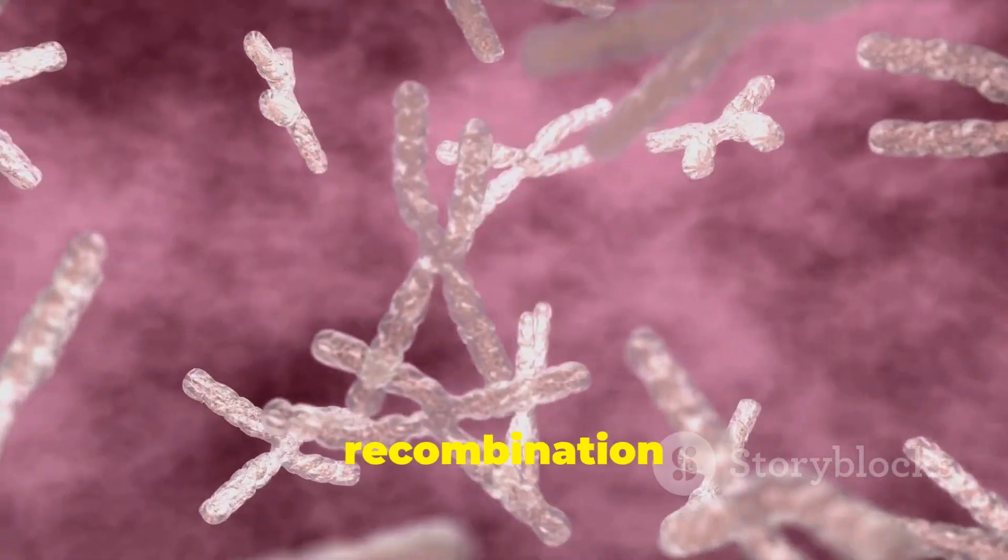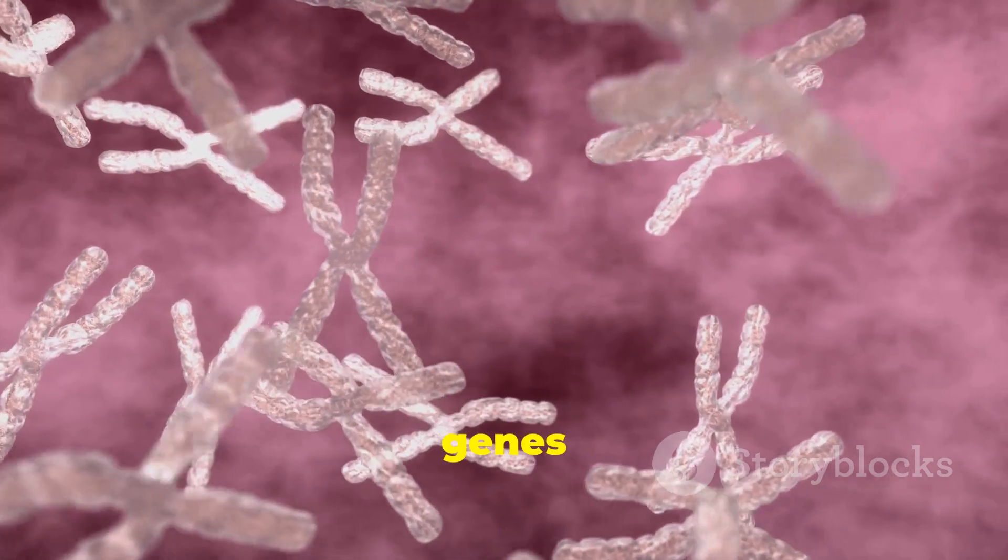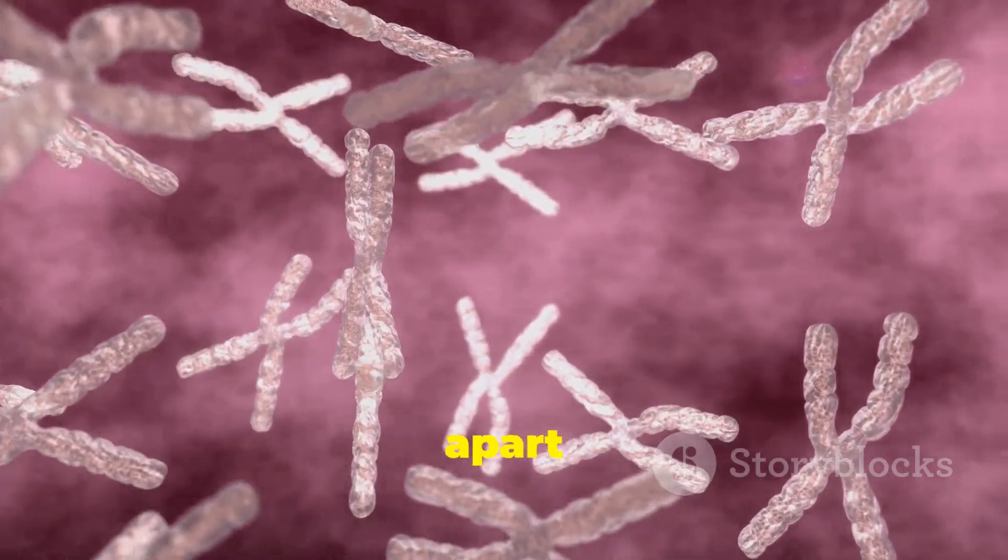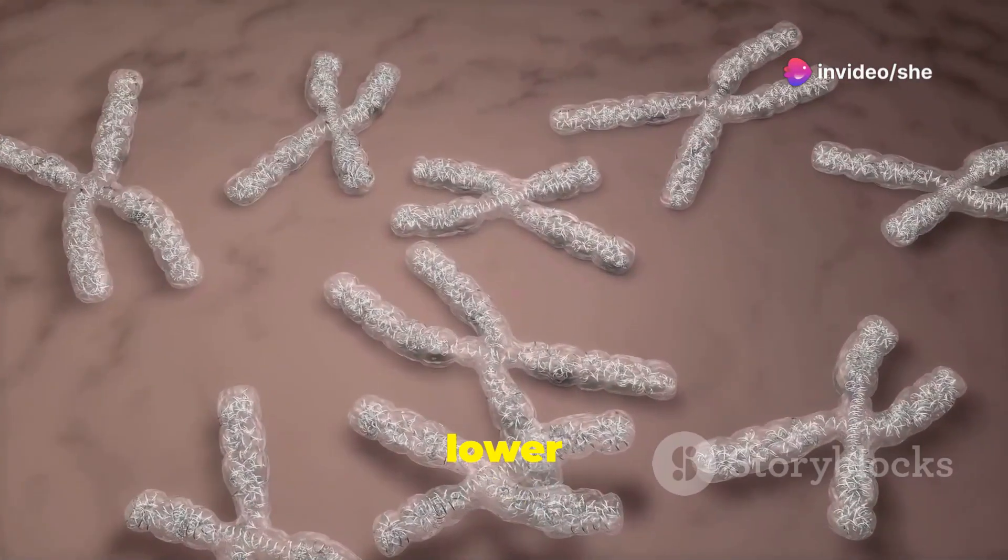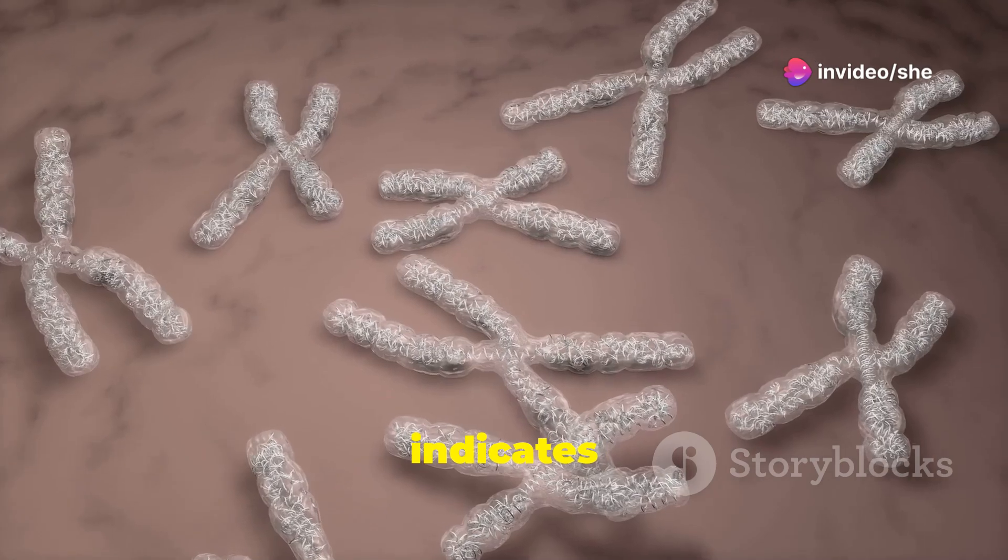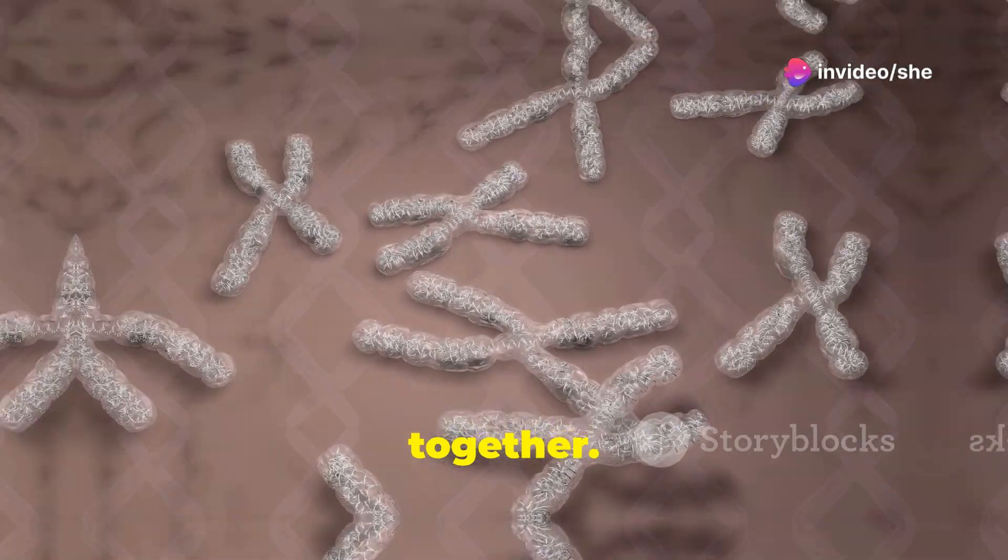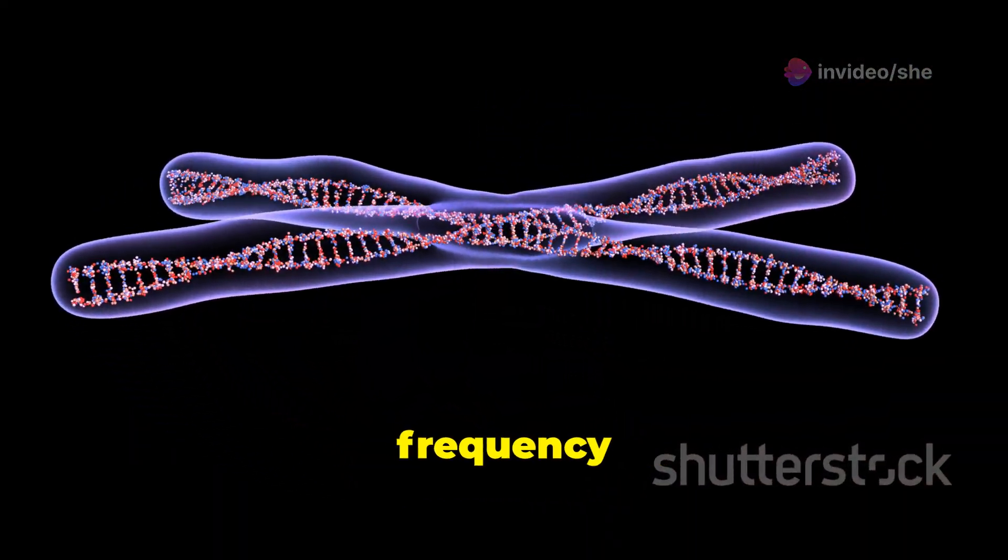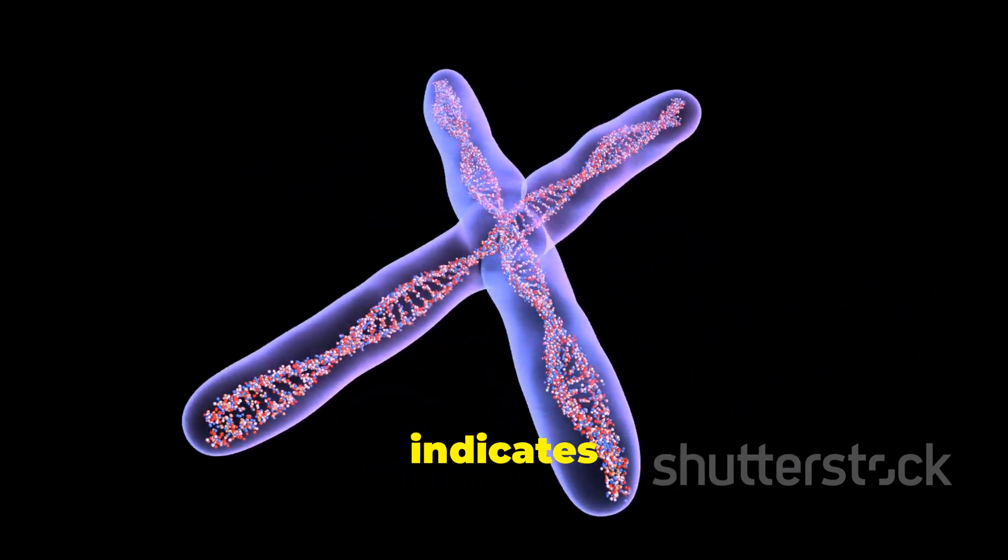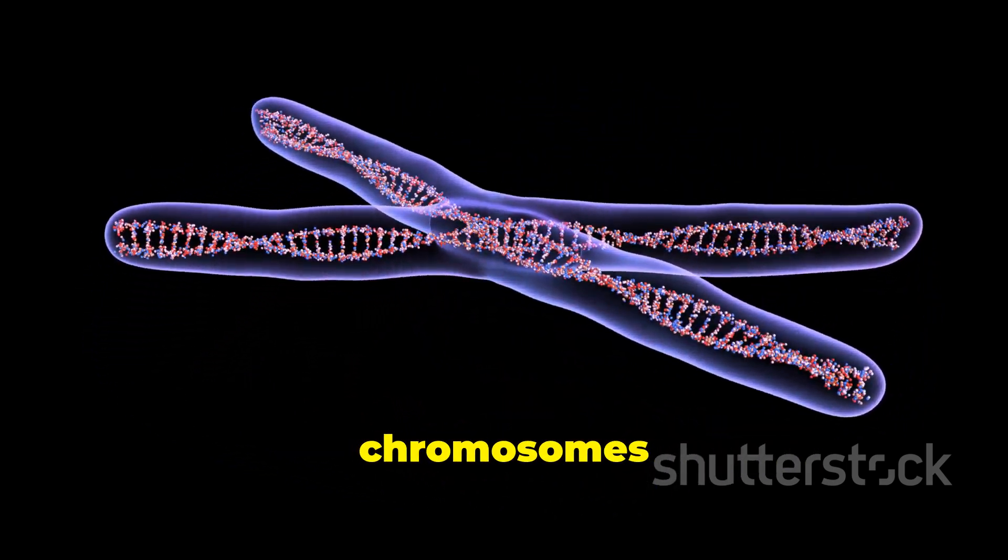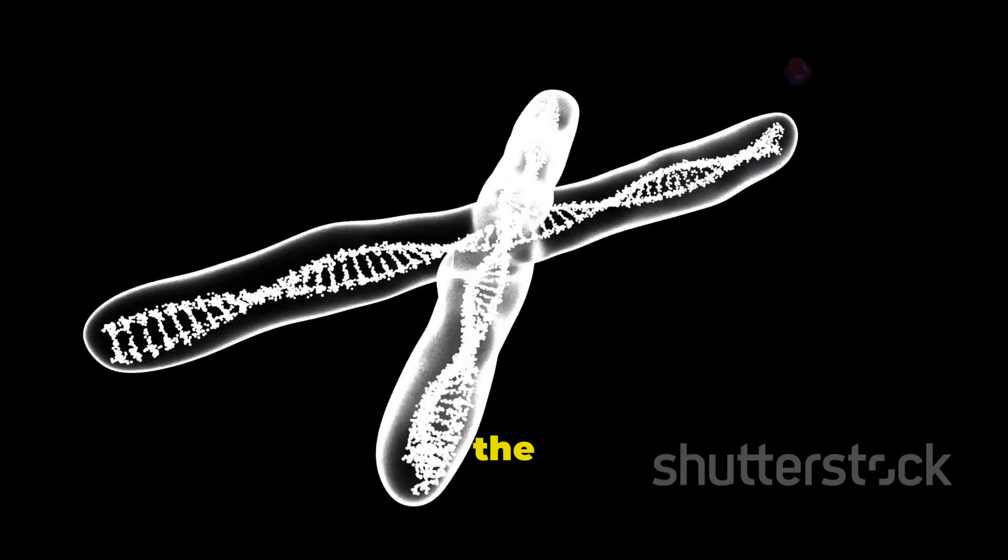Key points. A higher recombination frequency between two genes indicates that they are farther apart on the chromosome. A lower recombination frequency indicates that the genes are closer together. The maximum recombination frequency is 50%, which indicates that the genes are on different chromosomes or very far apart on the same chromosome.